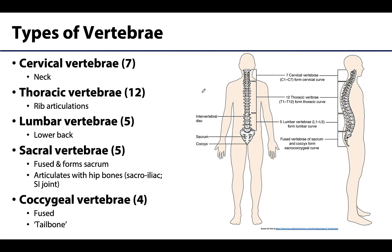There are five types of vertebrae that make up the vertebral column. The first three types are movable vertebrae, beginning superiorly and continuing inferiorly. The last two types are considered immovable, or fused vertebrae, making up separate named bones.